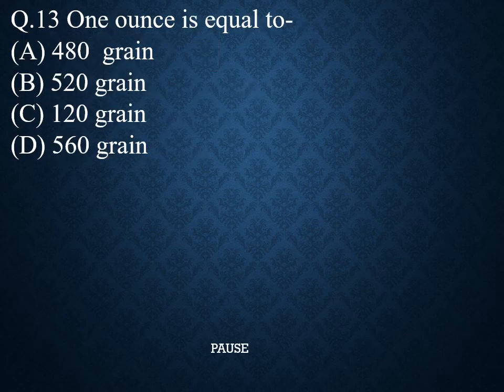Question 13. 1 ounce is equal to. Option A: 480 grains. Option B: 520 grains. Option C: 120 grains. Option D: 560 grains. And the right answer is 480 grains. That means 1 ounce equals 480 grains.